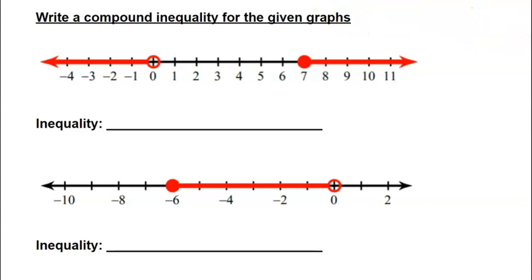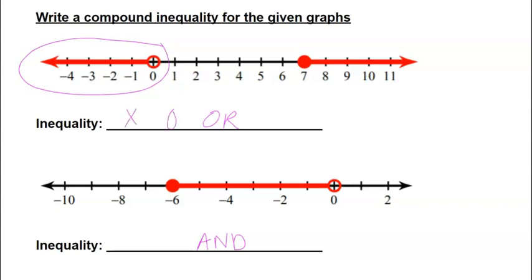Now let's write a compound inequality from a graph. One graph is an OR because it shades outward. The left piece has a circle at 0, shading left toward smaller numbers — so x < 0 with an open circle. Or, the right piece has a circle at 7 shading right, so x ≥ 7 with a closed circle. That gives us: x < 0 or x ≥ 7.